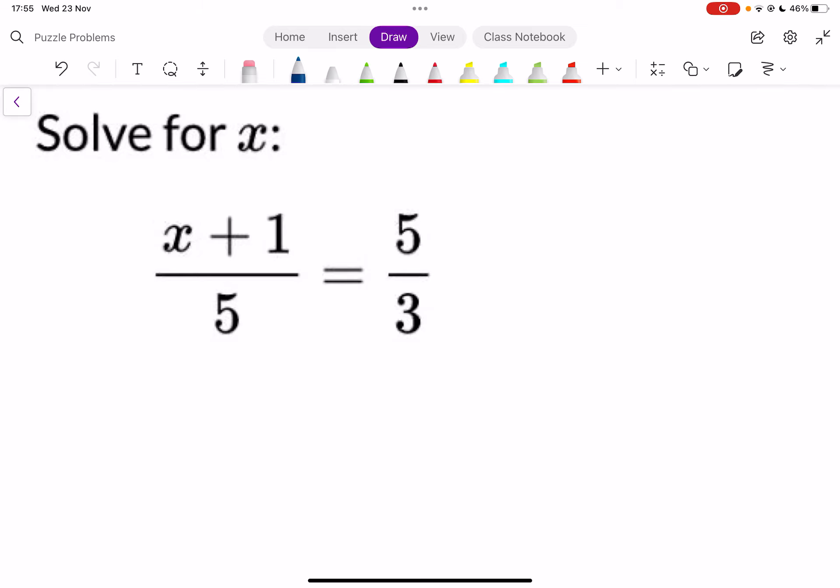So what you can do in this situation is just cross multiply. This 3 comes up and multiplies the whole top line, and this 5 comes up and multiplies the whole top line.